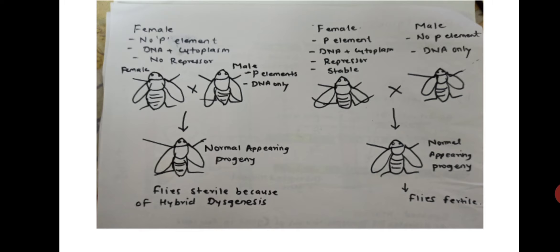The P element is commonly used as a mutagenic agent in genetic experiments with Drosophila, and one advantage of this approach is that the mutations are easy to locate. In hybrid dysgenesis, one strain of Drosophila mates with another strain producing hybrid offspring and causing chromosomal damage known as dysgenesis. Hybrid dysgenesis requires a contribution from both parents, as shown in the figure.